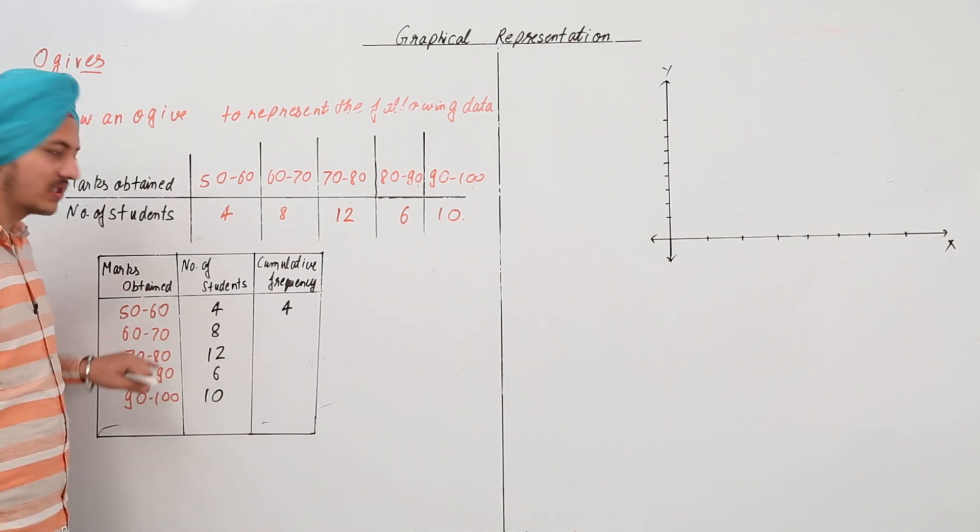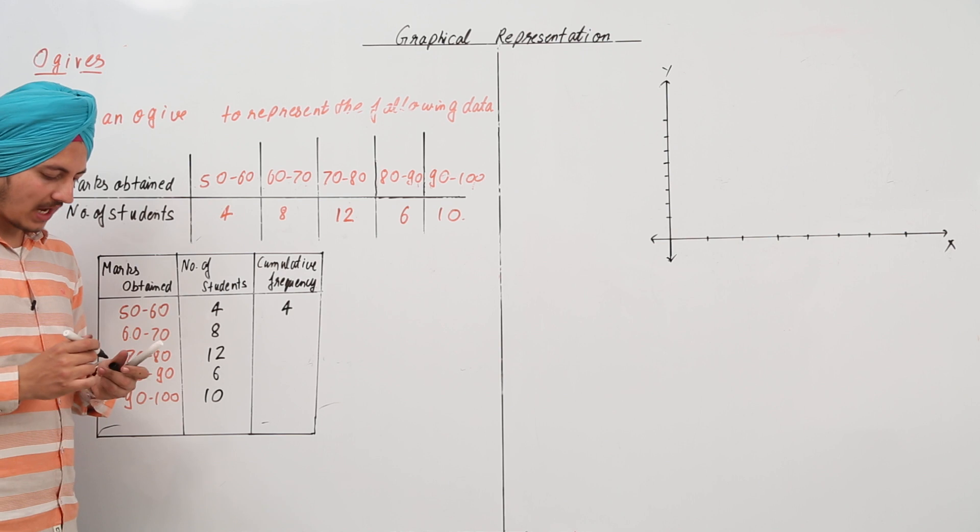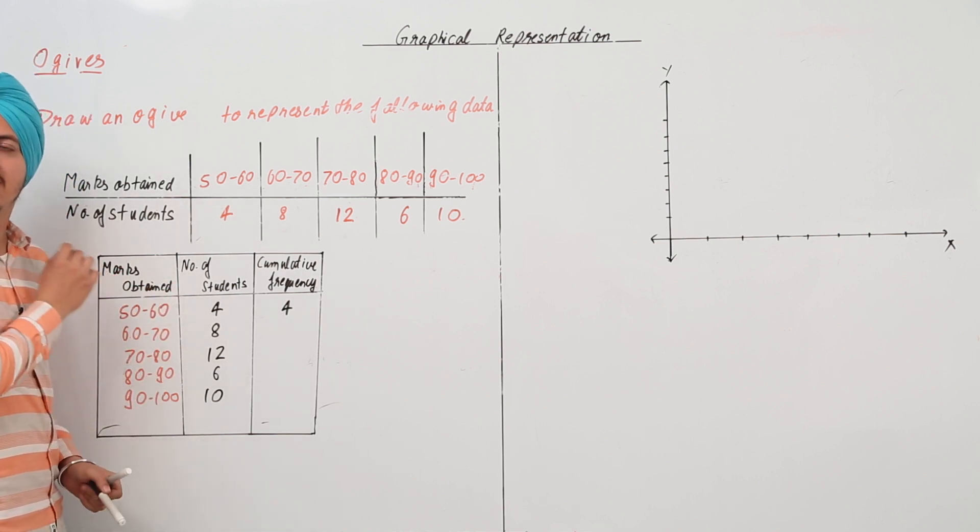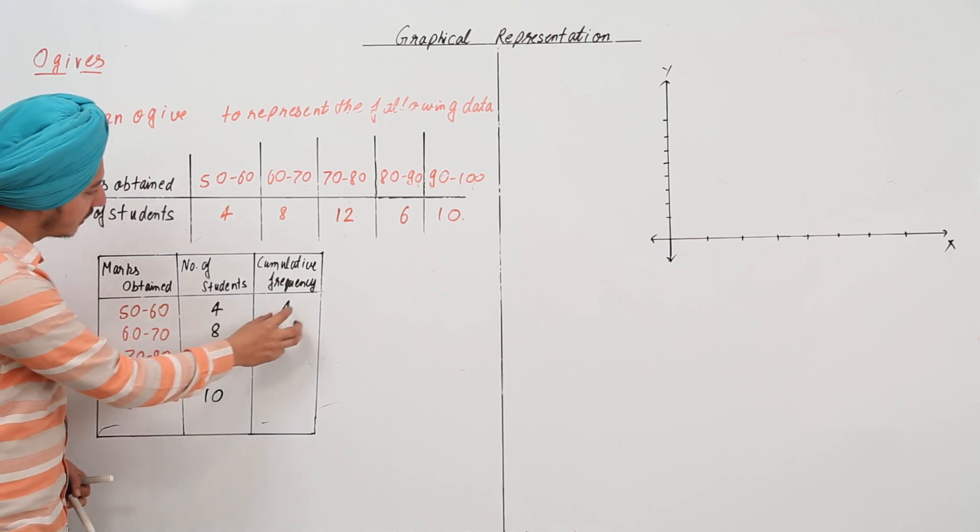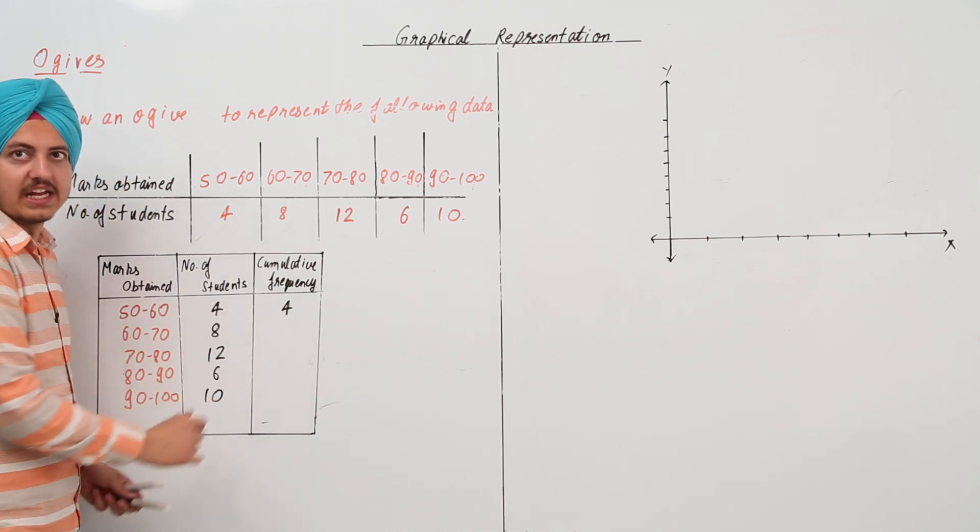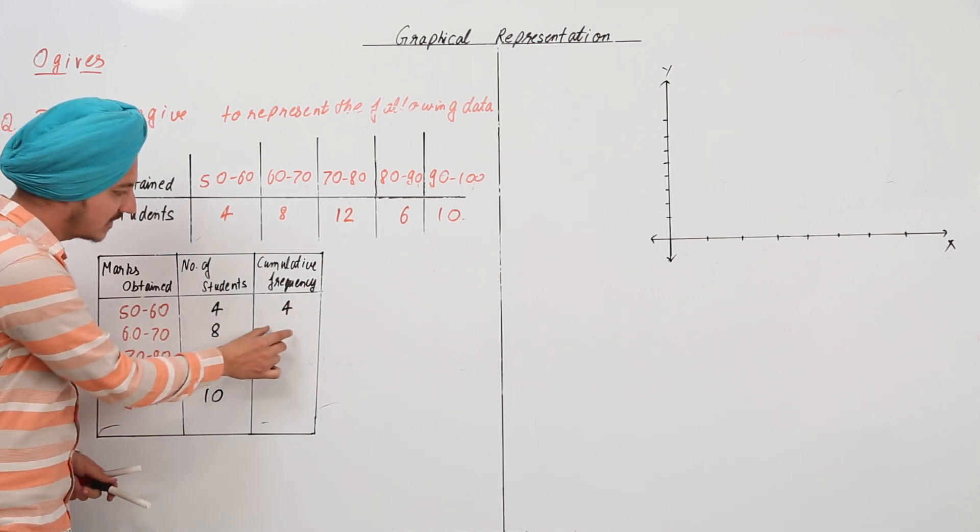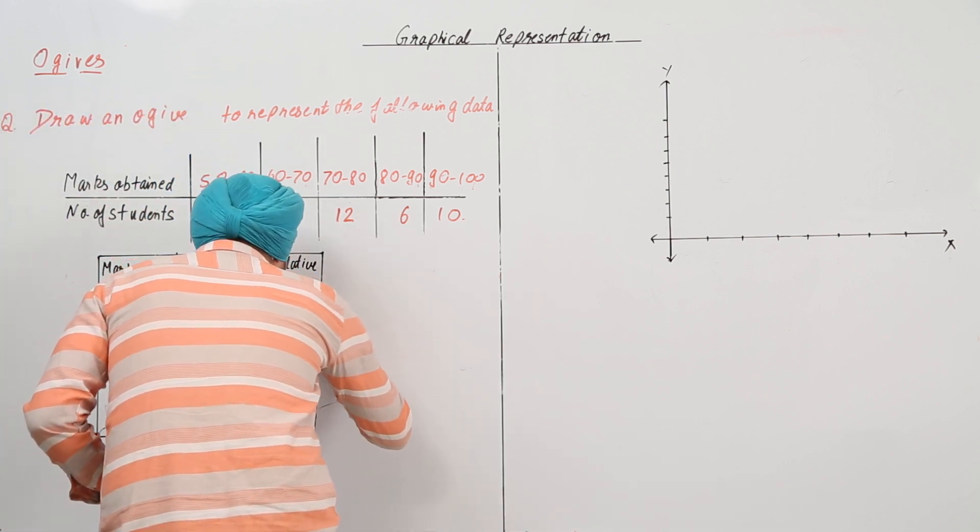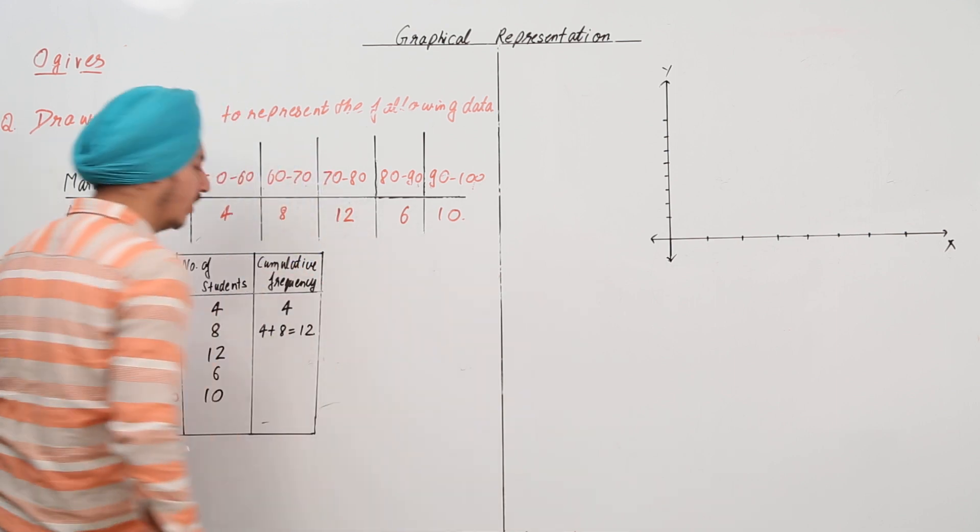Now, the cumulative frequency of 60 to 70 means that it should have all the marks of 60 to 70 and also the marks that are lesser. So, that will include this 4 and the 8. So, this is equal to 4 plus 8, that is equal to 12.